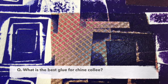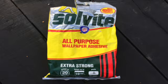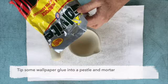Hello, in this video I'm going to show you how to use wallpaper glue for Sheen Colet. Wallpaper glue has little flakes in it and these sometimes show around the edge of your Sheen Colet and make a white mark.